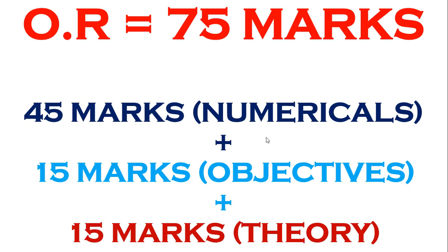Basically, Operation Research comes for 100 marks. These 100 marks are divided into two parts: 75 marks external plus 25 marks internal. In internal 25 marks, the minimum passing marks is 10 marks. In external 75 marks, the minimum passing marks is 30 marks. From the current academic year, the Operation Research 75 marks external paper is framed in a specific way.